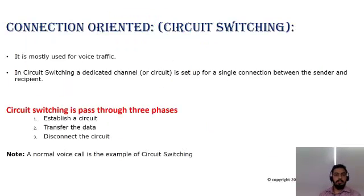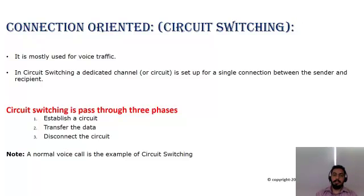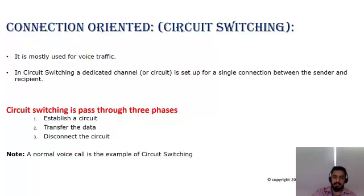The next switching mechanism is connection-oriented, also known as circuit switching. Circuit switching is mostly used for voice traffic. It creates a dedicated channel between source and destination for data transfer. This switching type performs three basic tasks: it establishes the connection, transfers the data using the same circuit, and then disconnects the circuit once the transfer is complete.